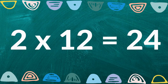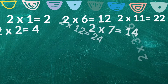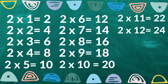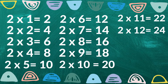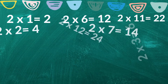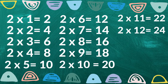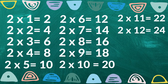Two times twelve is twenty four. Now let's all try singing it together. Two times one is two, two times two is four, two times three is six, two times four is eight, two times five is ten, two times six is twelve.